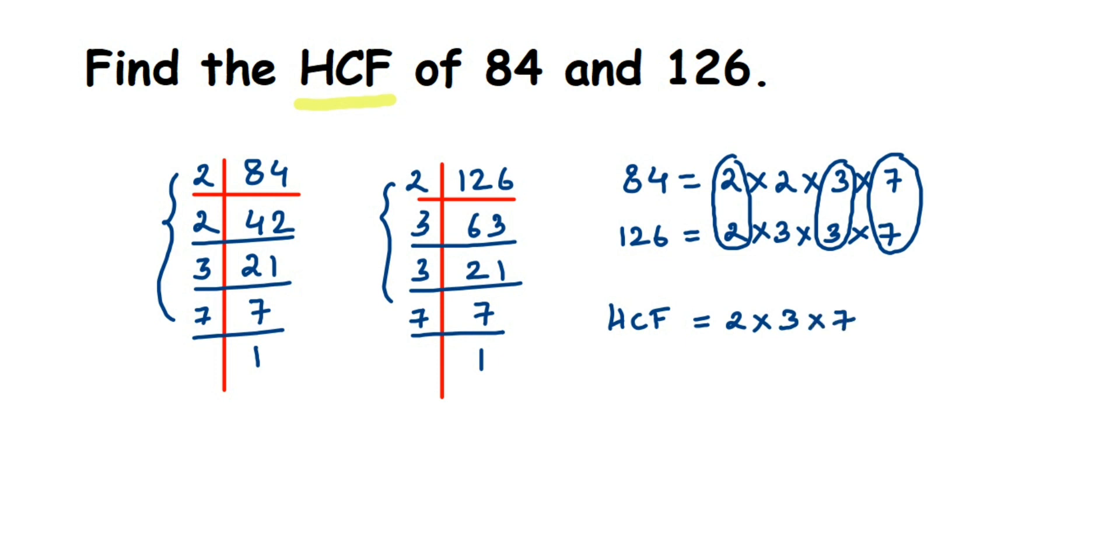So ignore them, just take the ones which are common and then multiply. So 2 times 3 times 7: 2 times 3 is 6, 6 times 7 is 42. So 42 will be the HCF.